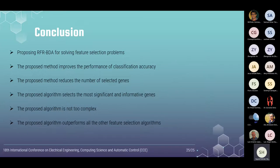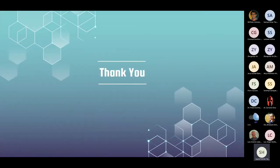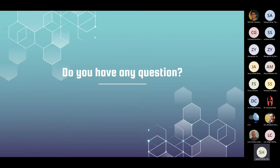In conclusion, the main contributions of our paper are: proposing random forest and BDA algorithm for solving feature selection problems; the proposed method improved classification accuracy while reducing the number of selected genes; the proposed algorithm selects the most significant and informative genes from thousands of genes in the dataset; the proposed algorithm is not too complex; and finally, the proposed algorithm outperforms all other feature selection algorithms. Thank you so much. If you have any questions, I'm glad to have them.